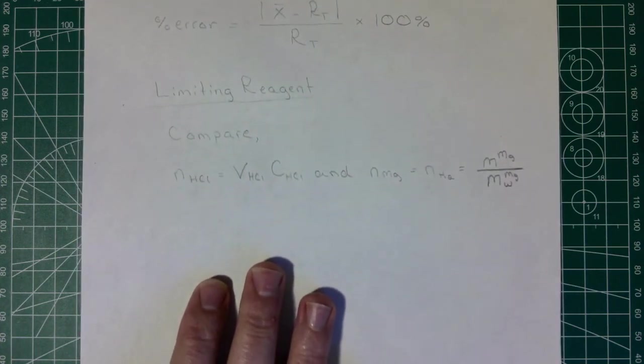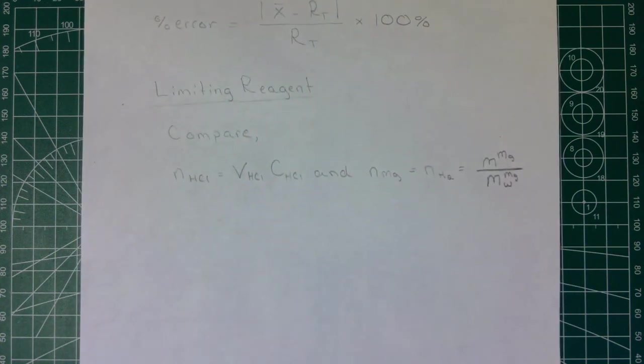Finally we want to figure out what is the limiting reagent. Is it the HCl or is it the magnesium? Remembering that if magnesium isn't our limiting reagent, then our assumption that all of it was converted to H2 wouldn't really be valid, would it?